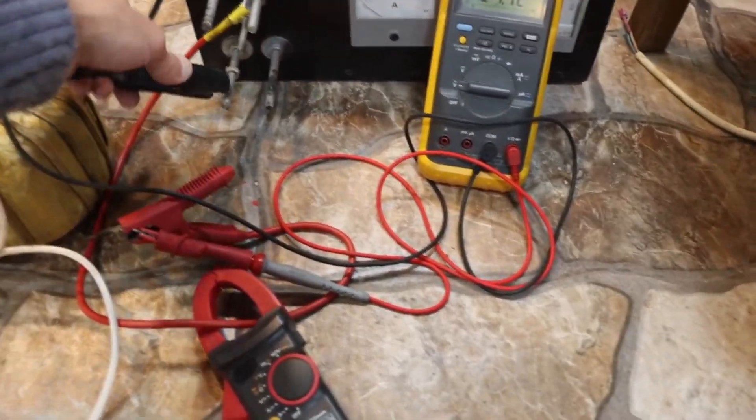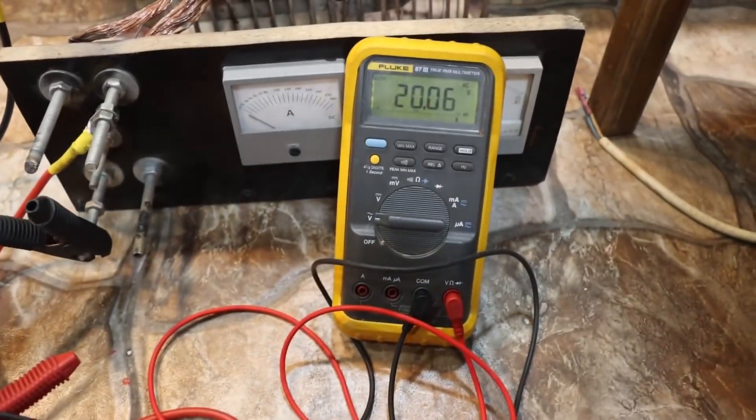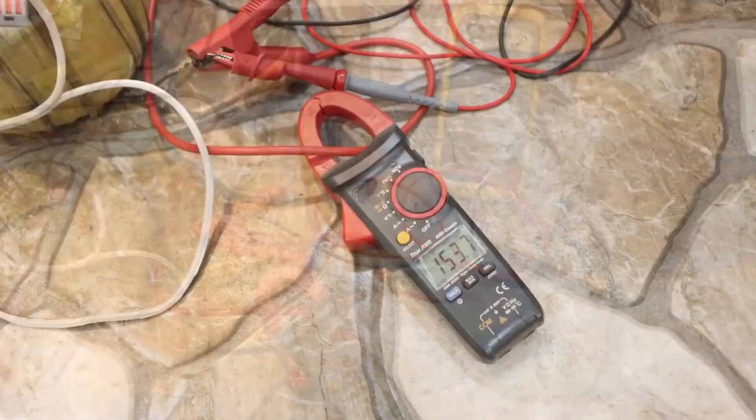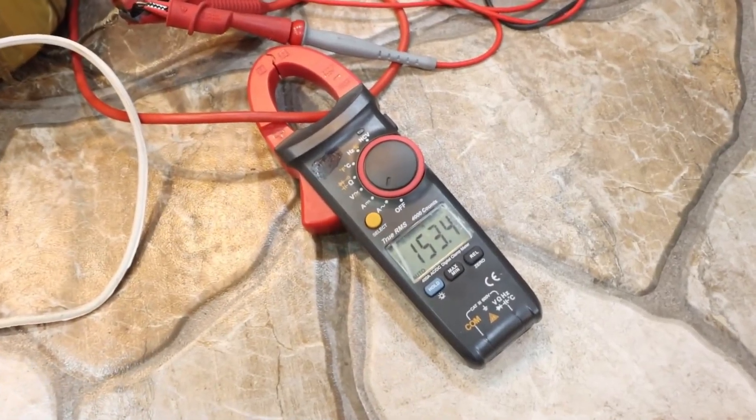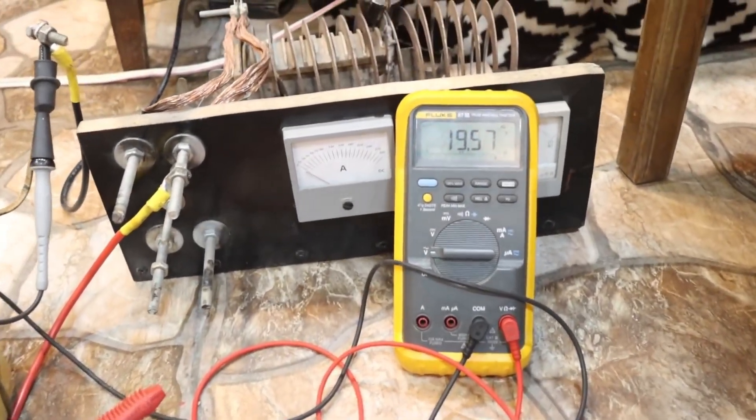I'm loading the transformer with a ballast. The load current is 80 amps. The output voltage dropped by only 1.4 volts. At a current of 150 amps, the output voltage is about 19.5 volts. It couldn't be more rigid.